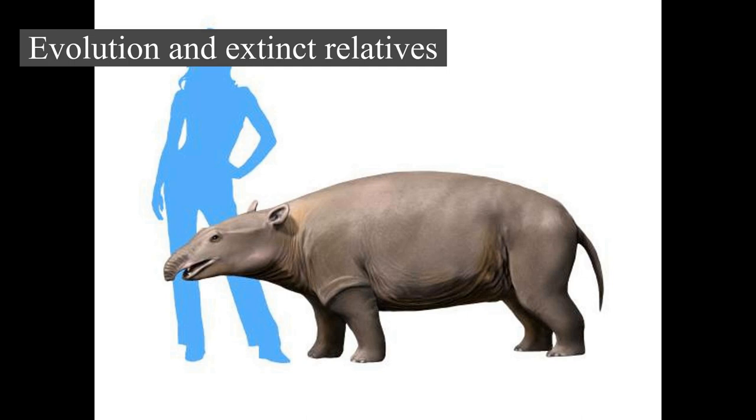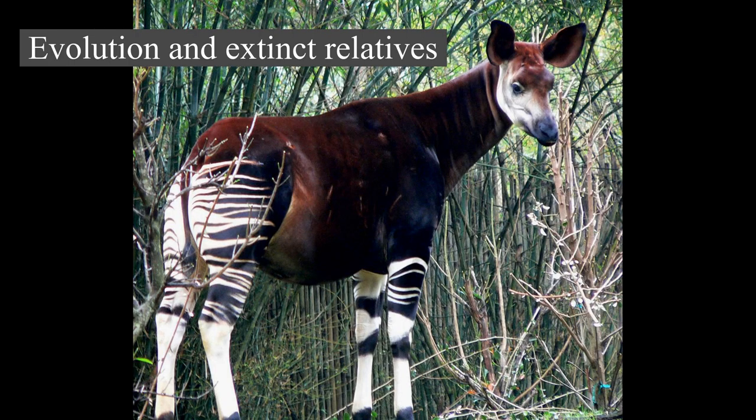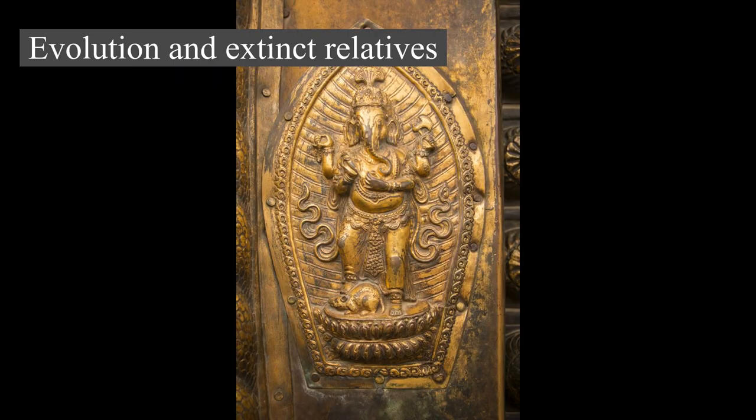Mammuthus evolved into several species, including the well-known woolly mammoth. Interbreeding appears to have been common among elephantid species, which in some cases led to species with three ancestral genetic components, such as Palaeoloxodon antiquus. In the late Pleistocene, most Proboscidean species vanished during the Quaternary glaciation, which killed off 50% of genera weighing over 5 kg worldwide.